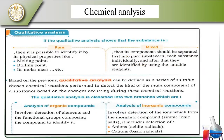We start with the part concerning pure substances — such as their melting point. We also look at qualitative analysis of the main groups we work on, including carbonates, bicarbonates, sulfides, sulfates, nitrites, and others.